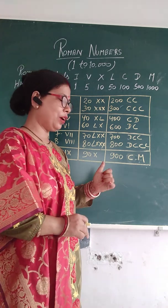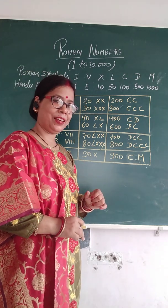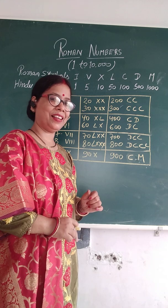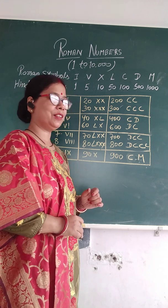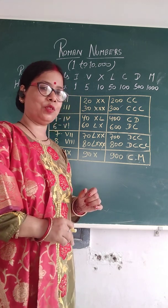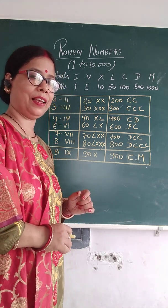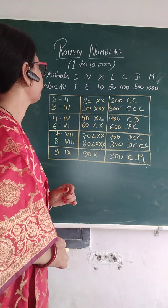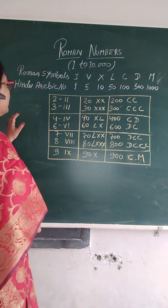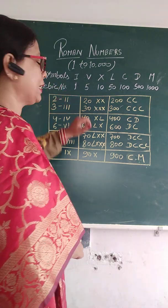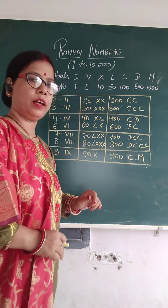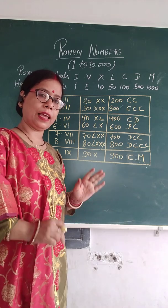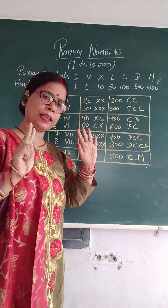So, you will see the whole video. After watching only a little of the video, don't comment, okay. So, you will get some knowledge, so just I will explain you. Roman symbol — only 7, only 7.